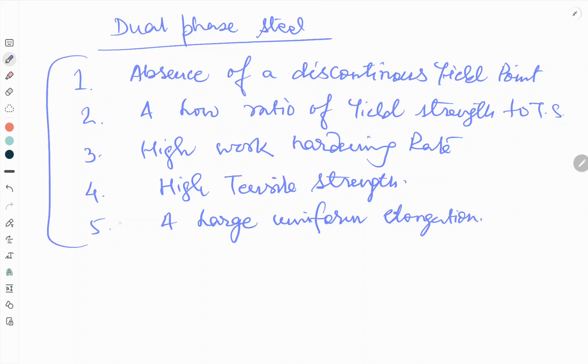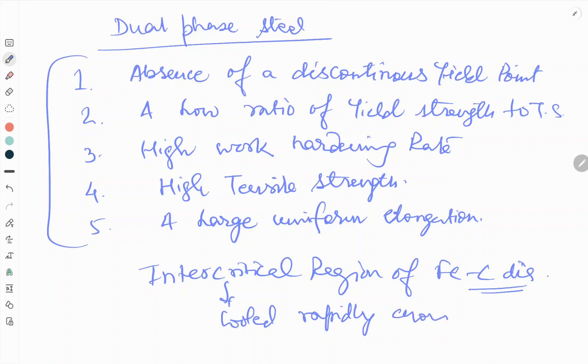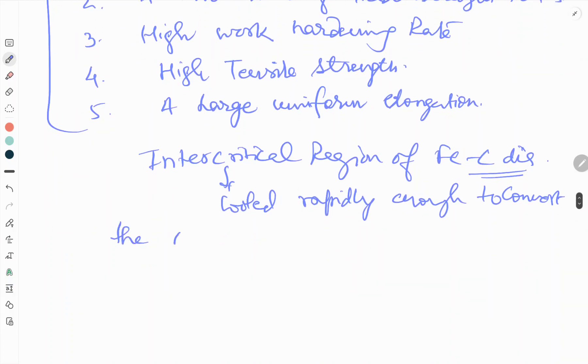Now we will see more about dual phase steel. Low carbon sheets are heated in the intercritical region of the iron-carbon phase diagram and then cooled rapidly enough to convert the austenite to martensite.